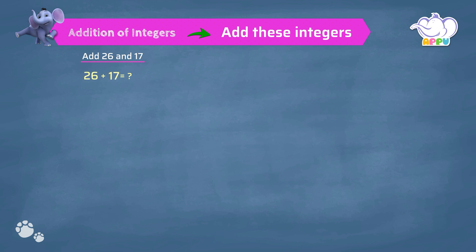Since both the numbers 26 and 17 have the same signs, we add both the numbers and place the sign of the number. 26 plus 17 is 43. Since both are positive integers, we use plus for the final answer. So the answer is 43.